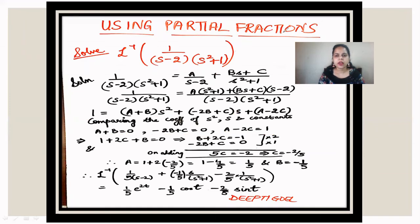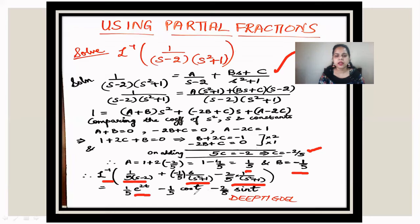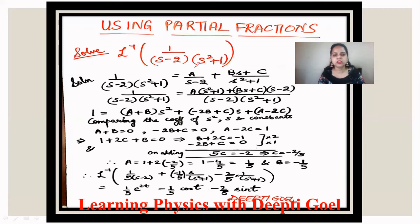Comparing with the left-hand side — which has only a constant term of 1 — we get: A plus B equals 0, minus 2B plus C equals 0, A minus 2C equals 1. Solving these linear equations, A equals 1/5, B equals minus 1/5, and C equals minus 2/5. Substituting back, the inverse Laplace gives (1/5)e^(2t) minus (1/5)cos(t) minus (2/5)sin(t).